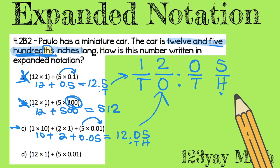But just in case, let's check D. (12×1) is 12, plus (5×0.01), okay, 0.05 is 12.05. So these two are the same, but which one is the correct answer? C? D? This is why you have to pay attention to the place value.